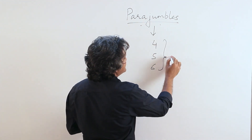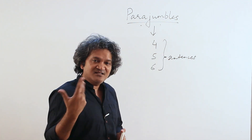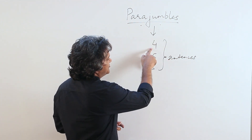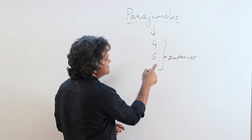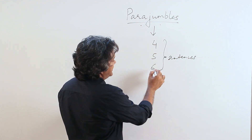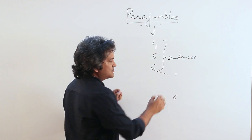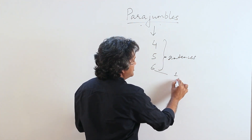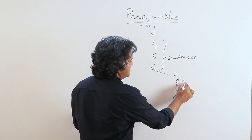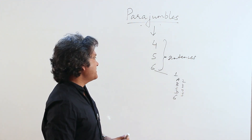You're given four, five, or six sentences — this can change depending on the test makers, but that's the usual trend. In the case of six sentences, usually the first and the sixth are fixed, and then you're given the middle ones labeled A, B, C, D or 2, 3, 4, 5 — they're jumbled up and you have to rearrange them to form a coherent paragraph.